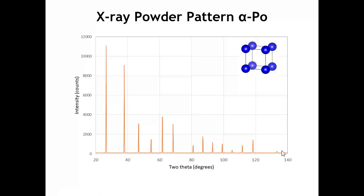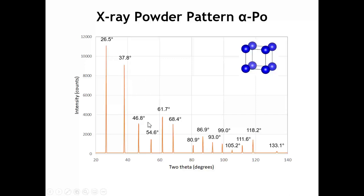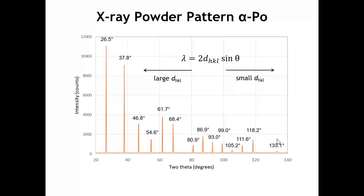How can we analyze this diffraction pattern and learn some information about our crystal? Let's start by considering the 2 theta angles at which we're seeing constructive interference. You can go in and have a closer look at what angles give you constructive interference, and these are the 2 theta values of those peaks. There are 14 peaks found between 2 theta of 20 and 2 theta of 140. Let's also remember the relationship between the spacing of the lattice planes and the theta angle — here's Bragg's Law: 2d sine theta equals lambda.